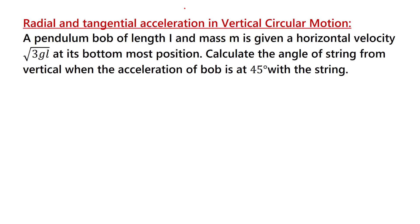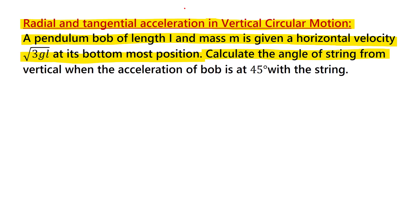Hello friends! This problem illustrates the concept of radial and tangential acceleration in vertical circular motion. The problem says: a pendulum bob of length L and mass M is given a horizontal velocity of √(3gL) at its bottommost position. We have to calculate the angle of the string from the vertical when the acceleration of the bob is at 45 degrees with the string.